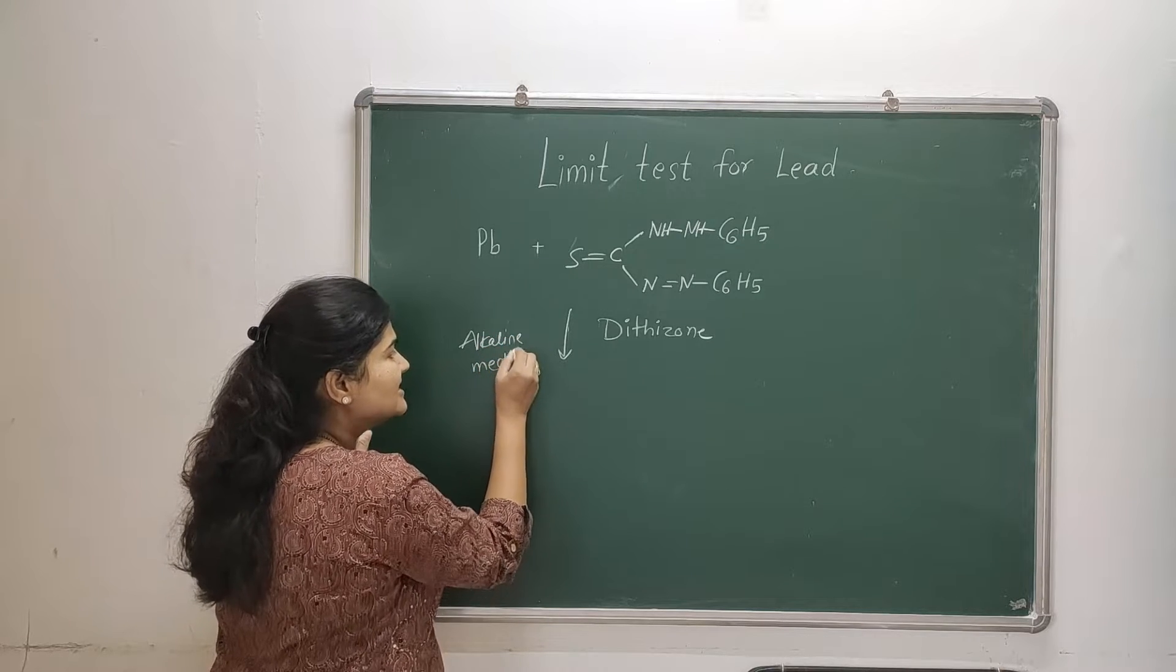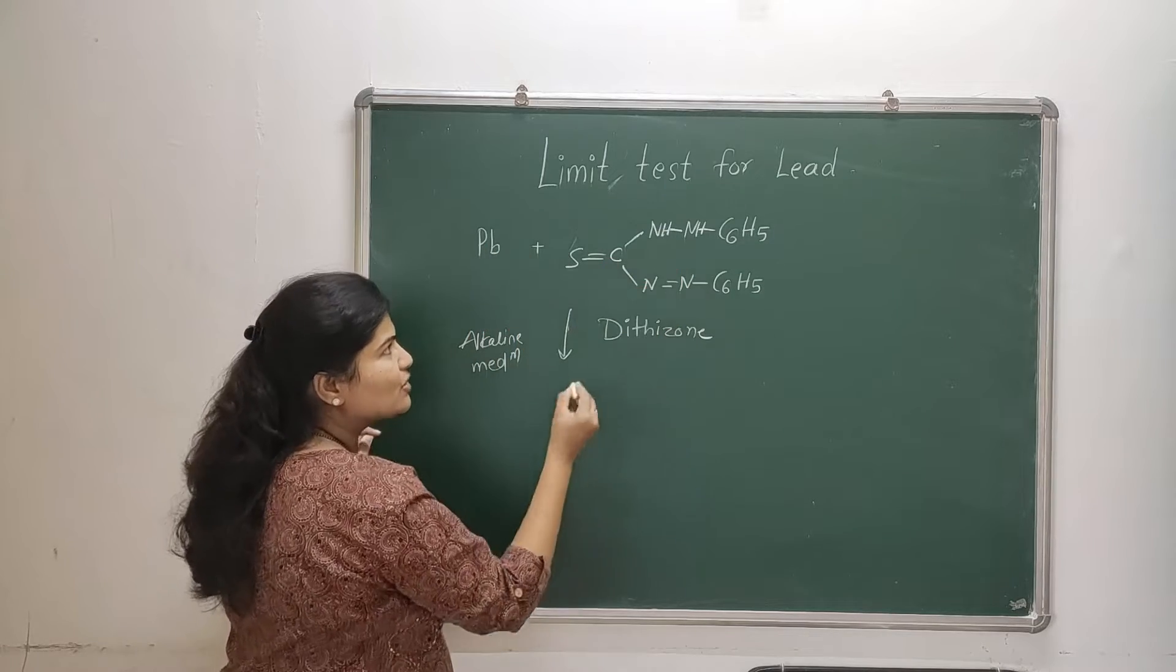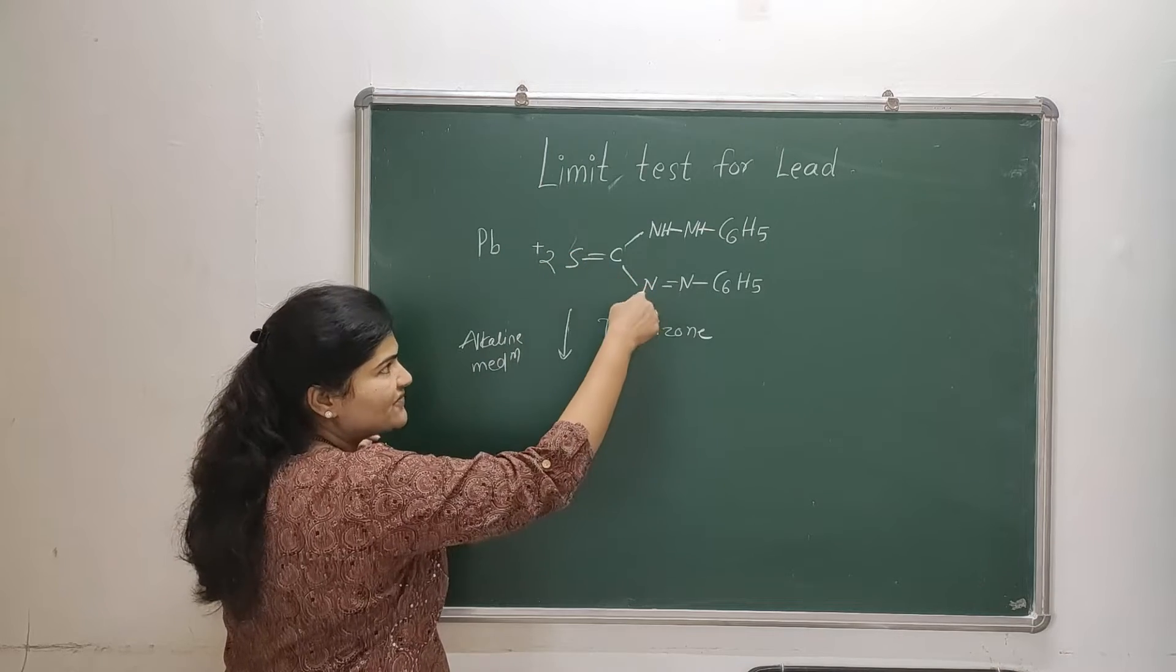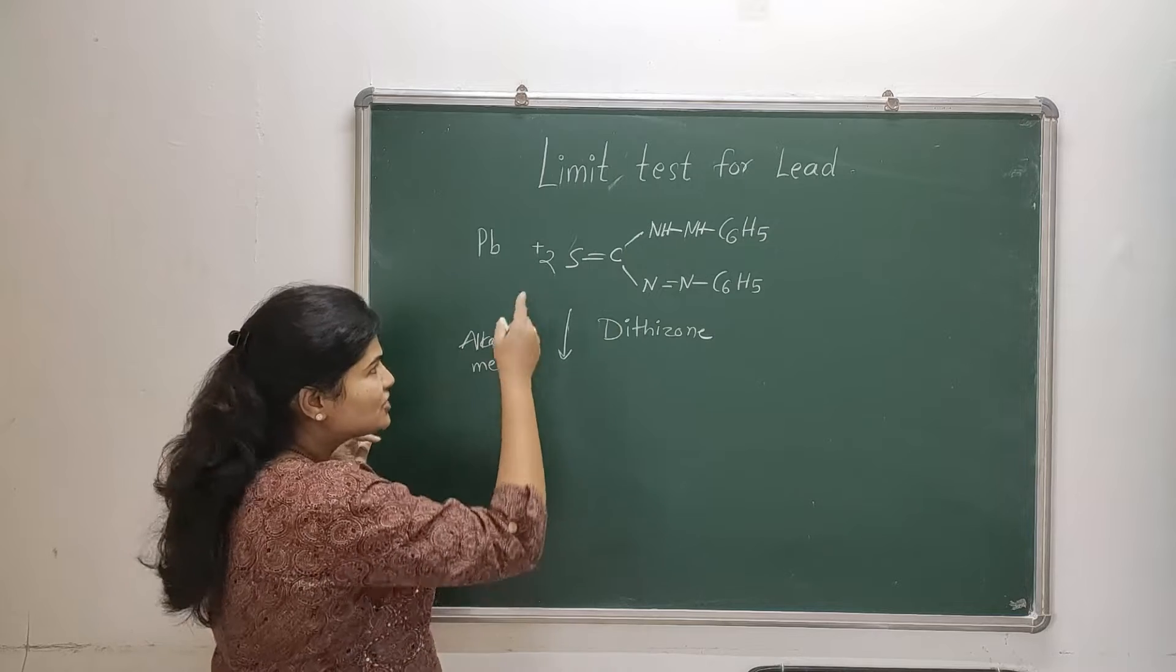Now how is it going to be formed? I will tell you. I will need two moles of this for one atom of lead. So how is it going to be formed: S double bond C, then carefully watch what I am drawing - N X.